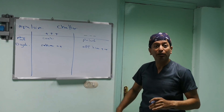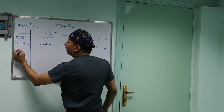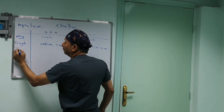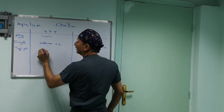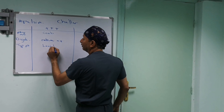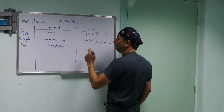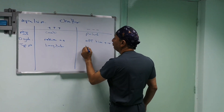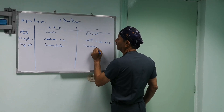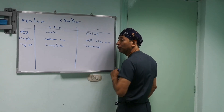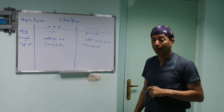The type of phaco also matters: if you're using longitudinal phaco, this will increase your chatter. If you use torsional phaco — if your machine can give you torsional phaco — this will decrease your chatter.